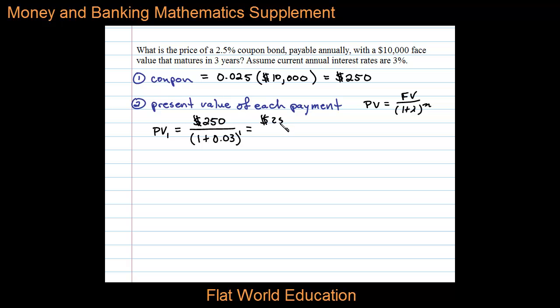Simplifying the calculation, we have $250 divided by 1.03^1, and that comes out to $242.72.